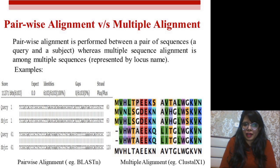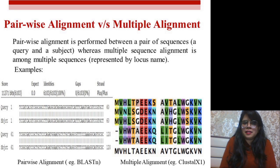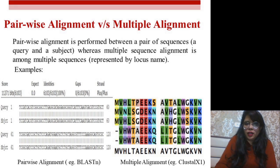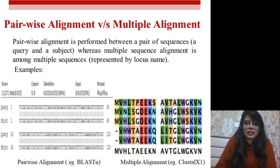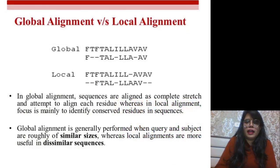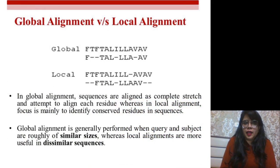These alignments reveal similarity patterns, dissimilarities, gaps, deletions, or insertions. Any mismatch denotes either a deletion, an addition, or a substitution of a base pair. These are the different parameters examined in multiple and pairwise alignments.